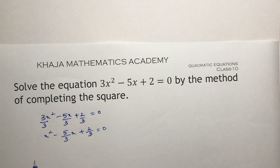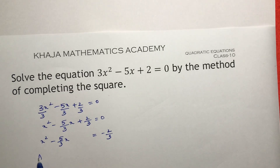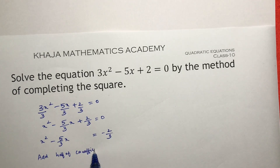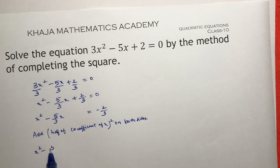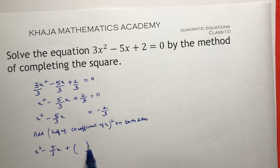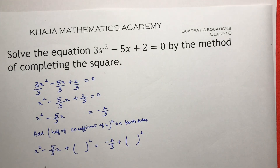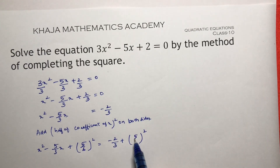Now send the constant to the other side: x² minus 5/3 x equals minus 2/3. Here you need to add half of the coefficient of x, whole square, to both sides. The coefficient of x is 5/3, so half of 5/3 is 5/6. So we add (5/6)².